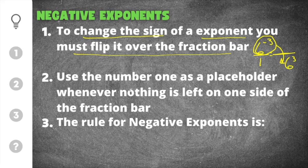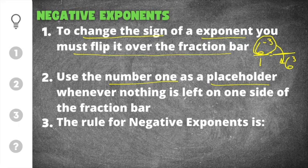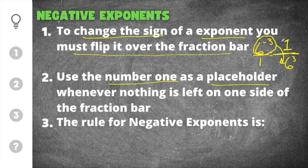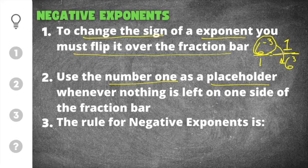After you flip over the fraction bar, you use the number one as a placeholder whenever nothing is left on one side. So in our example, we have six to the positive third now flipped over the fraction bar, which is in the denominator. Now we need a placeholder in the numerator, and we're going to use the number one. So six to the negative third would be equal to one over six to the positive third.